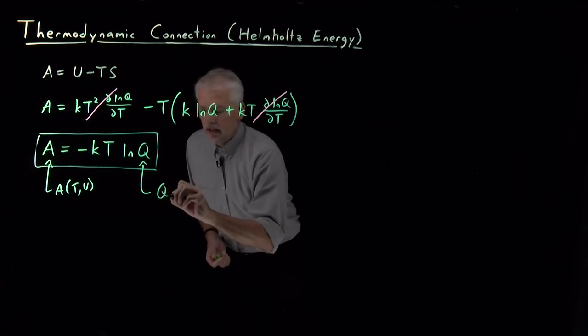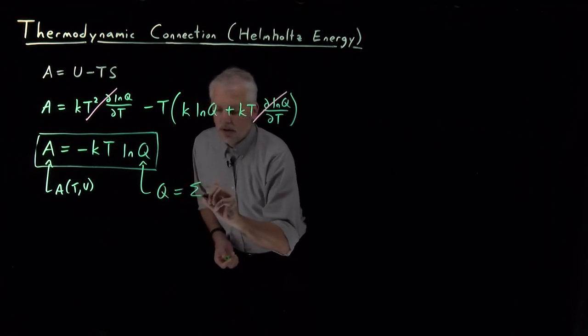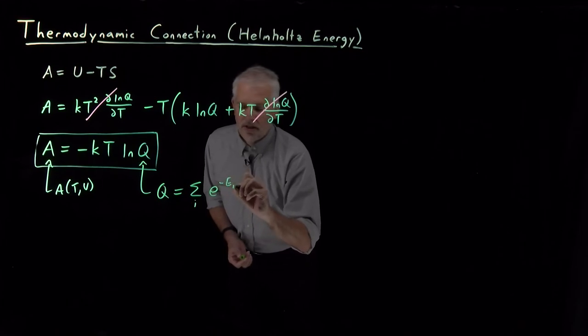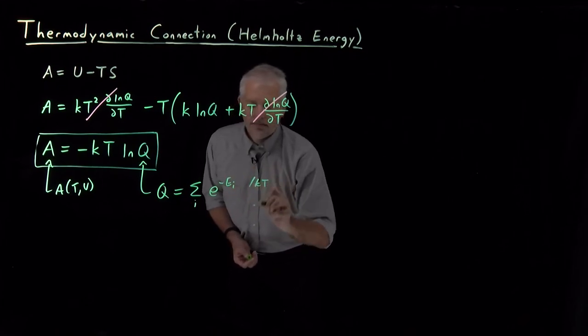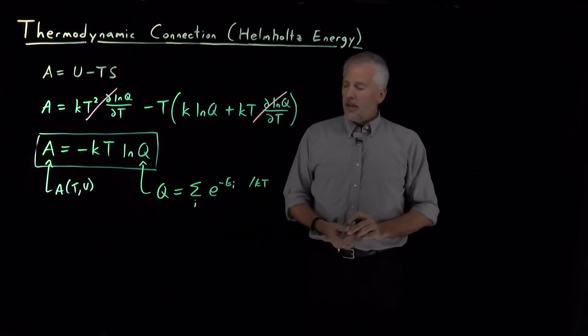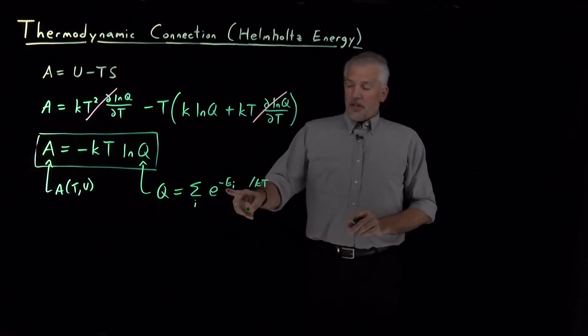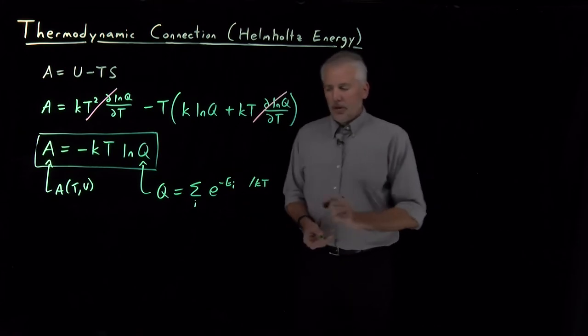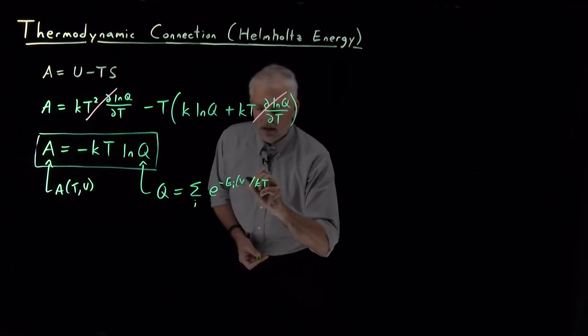What I mean by that, if we remember what the partition function is, that's the sum of Boltzmann factors, the sum of e to the minus energy divided by kT, summed over all the states the system can have. The energies, if we think about a system like a particle in a box for example, the energies will depend on the volume.